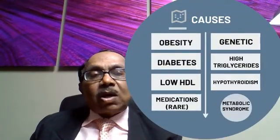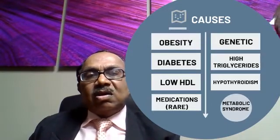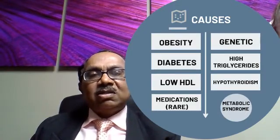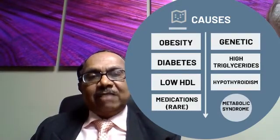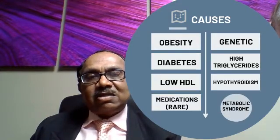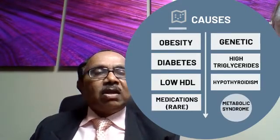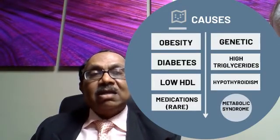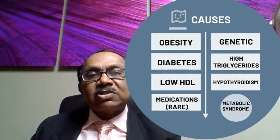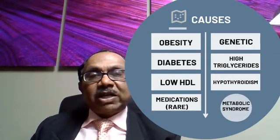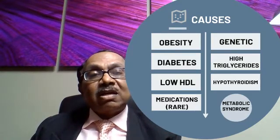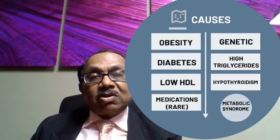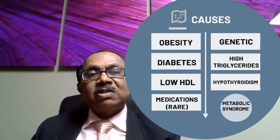What are the causes of this spectrum of diseases — NAFLD, NASH, and cirrhosis from NAFLD and NASH? Obesity and diabetes are the commonest causes. Low high-density lipoproteins, the good cholesterol, can be a predisposing factor. Some medications can do this, and in some people genetic transmission can occur. High triglycerides and hypothyroidism are also causes, but the principal main factors are obesity and diabetes.